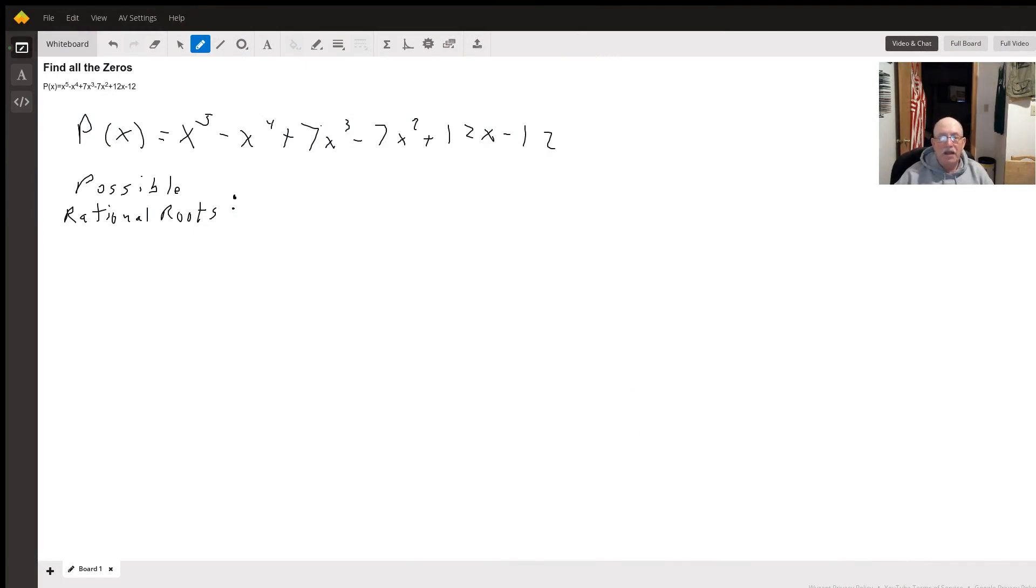Hello. Well, we're going to use synthetic division to solve this, but first we have to find the possible rational roots, which are all the factors of 12 over all the factors of the lead coefficient, which is 1.